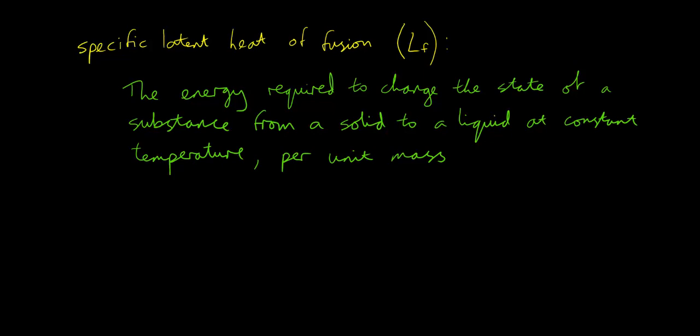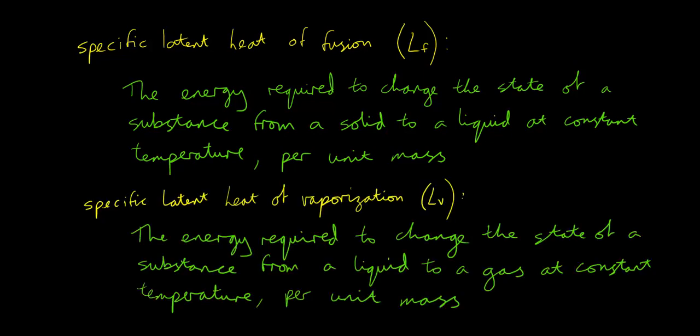So this is the value that would tell you how much energy is needed to turn one kilogram of ice into one kilogram of water. And specific latent heat of vaporization: this is the energy needed to change the state of a substance from a liquid to a gas at constant temperature per unit mass — so the energy required to turn one kilogram of water into one kilogram of steam without changing the temperature.